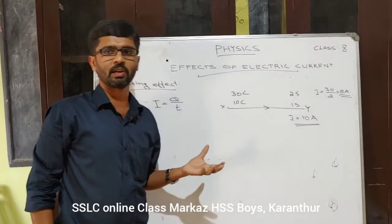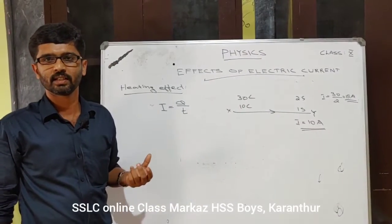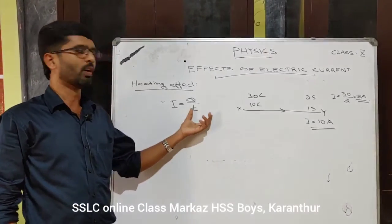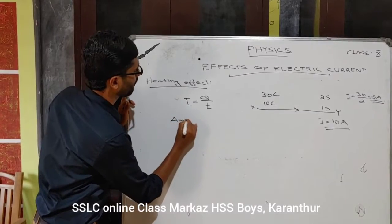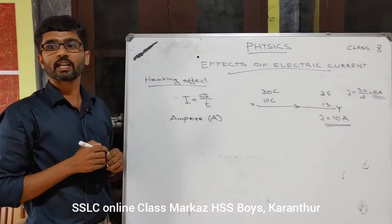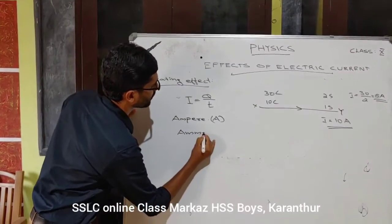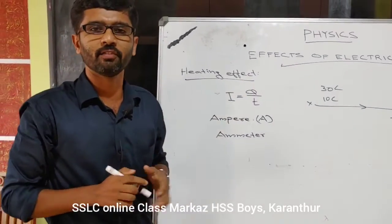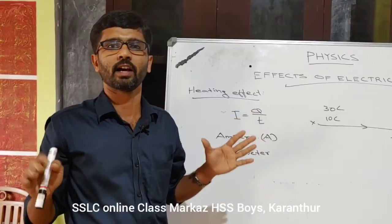Electric current is the flow of electric charge. I is equal to Q by T. The unit of electric current is the Ampere. An ammeter is a device used to measure electric current.